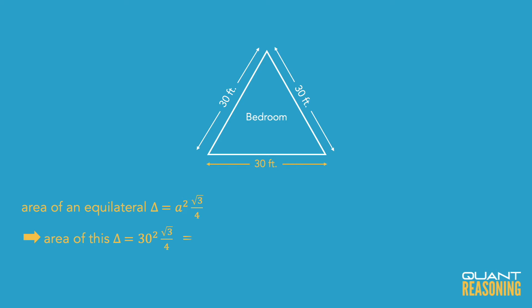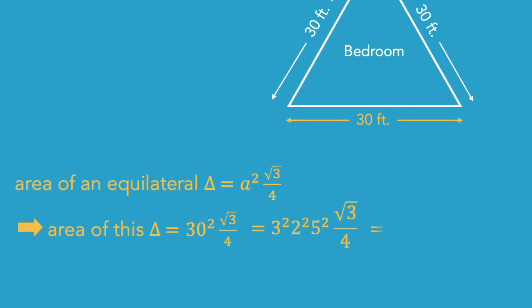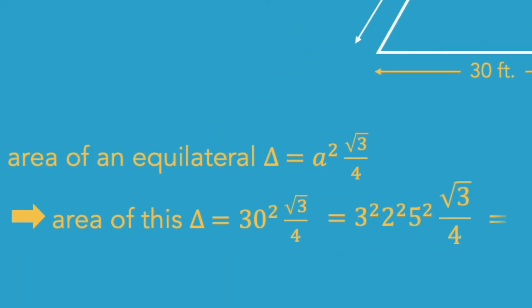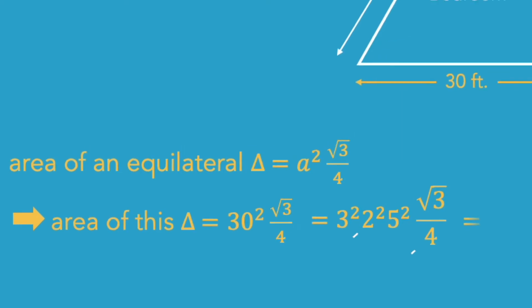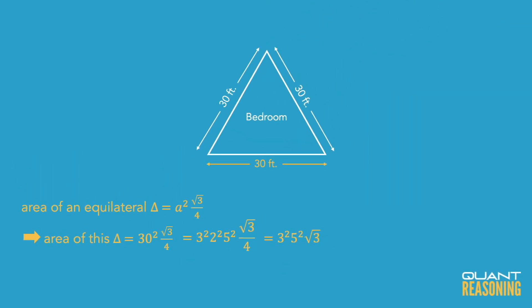I would probably split the 30 squared into its prime factors. So it's 3² times 2² times 5² times √3 over 4. And then I can reduce the 2² and the 4 and I'm left with just 3² 5² √3 or 15² √3. And 15 squared is 225.